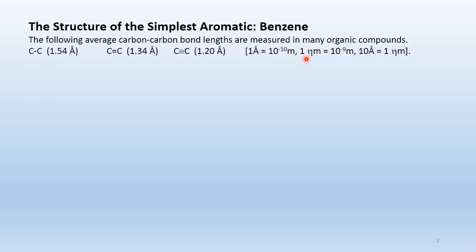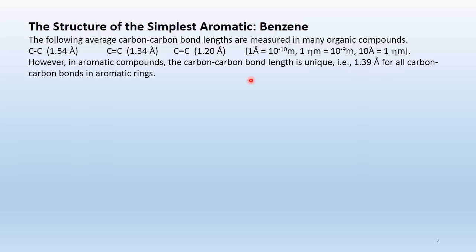An angstrom is 10 to the minus 10 meters. Comparing with a nanometer: 1 nanometer is 10 to the minus 9 meters, so an angstrom is 10 times smaller than a nanometer. In aromatic compounds, the carbon-to-carbon bond length is unique — it's 1.39 angstroms for all bonds in an aromatic ring, lying between the single and double bond lengths.